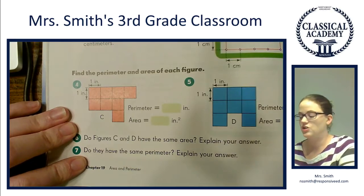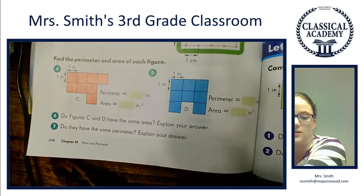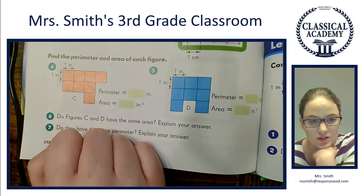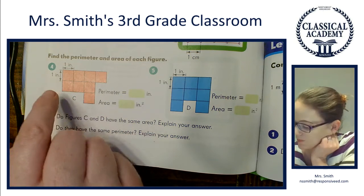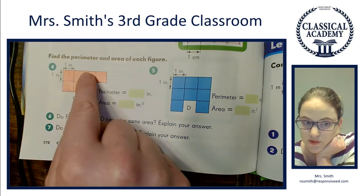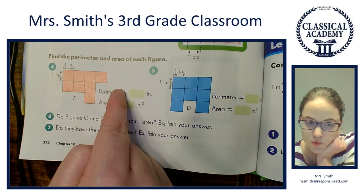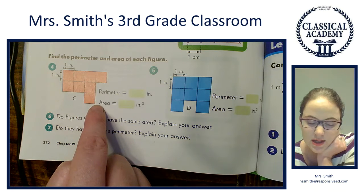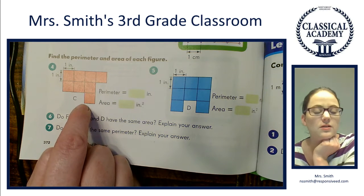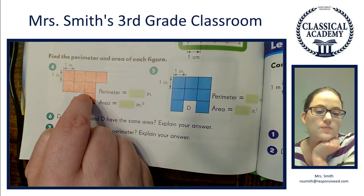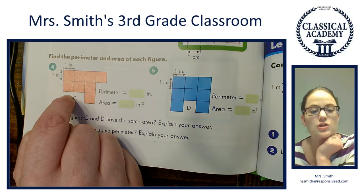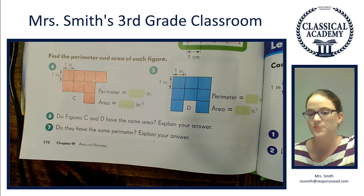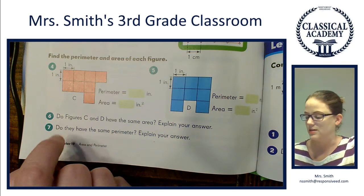Find the perimeter and area of each figure. Let's do the perimeter first: 2 + 4 is 6, plus 1 is 7, plus 1 is 8, plus 2 is 10, plus 1 is 11, plus 1 is 12, plus 2 is 14. So the perimeter of number 4 is 14 inches. The area is 1, 2, 3, 4, 5, 6, 7, 8, 9.